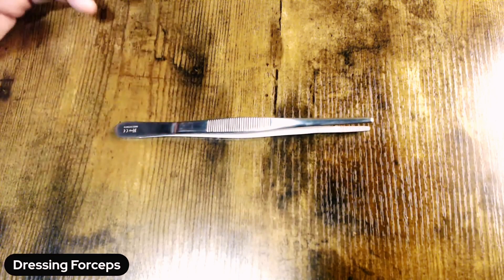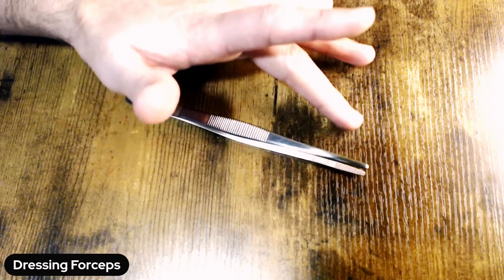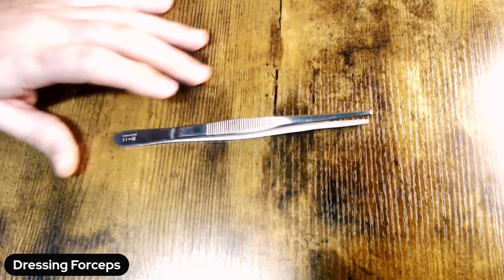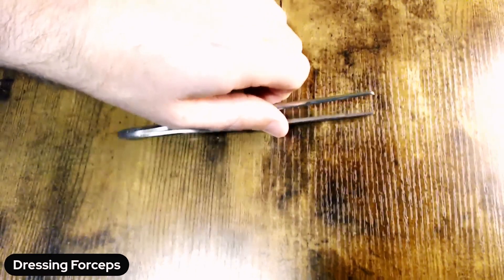As with our other forceps, in terms of inspection, you're going to want to be looking for any debris that's retained in the tip itself or anything that's on the back of the handle towards the proximal end.